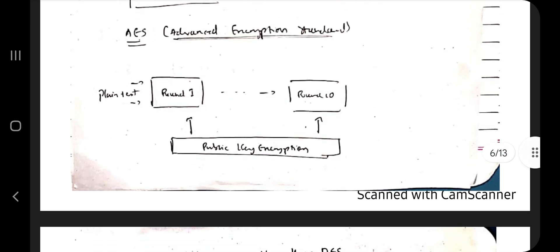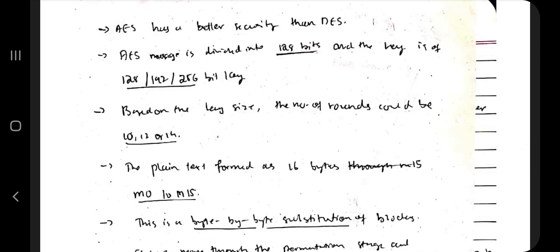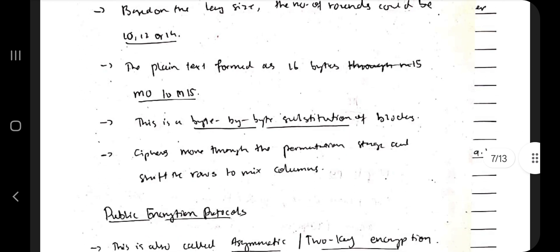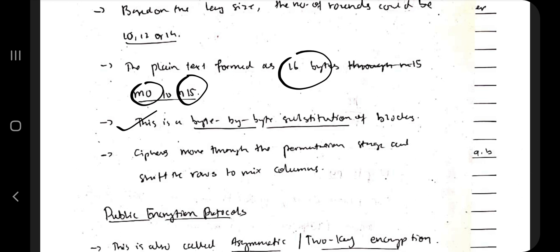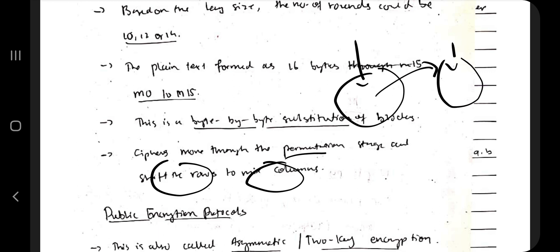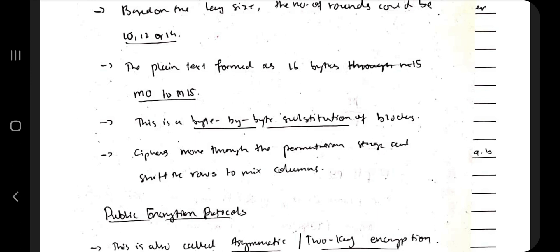AES (Advanced Encryption Standard) is more secure than DES. It has 128 bits and uses a key of 128, 192, or 256 bits. Based on key size, the number of rounds is decided as 10, 12, or 14. The plain text is formed in 16 bytes from m0 to m15. It uses a byte-by-byte substitution method with permutation and combination to shift rows and columns, then reverses the process to recover the plain text.